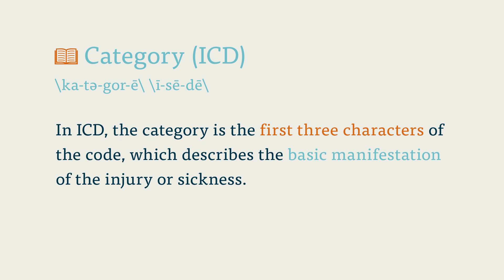Category ICD. In ICD, the category is the first three characters of the code, which describes the basic manifestation of the injury or sickness. In some cases, the category is all that is needed to accurately describe the condition of the patient, but more often than not, the coder must list a more detailed description of the injury or illness.